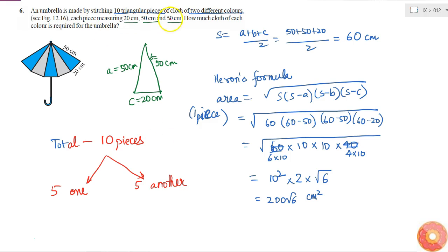So the question is how much cloth of each color is required for the umbrella. So cloth required of one color is 5 times of this triangle which is 5 into 200 root 6, that is equal to 1000 root 6 cm square.